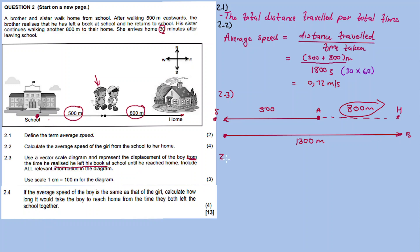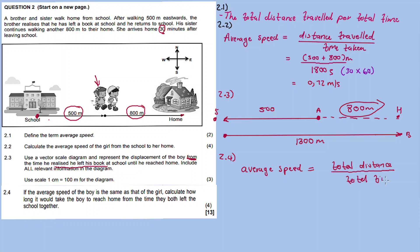Question 2.4: if the average speed of the boy is the same as that of the girl, calculate how long it would take the boy to reach home from the time they both left school together. Average speed equals total distance divided by total time taken.